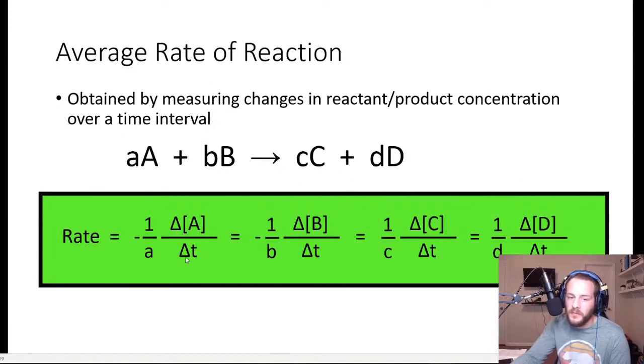So it's going to be equal to minus 1 over lowercase a times the quotient of the change in concentration of A over delta t, which is equal to minus 1 over b times delta concentration of B over delta t, which is equal to 1 over c.